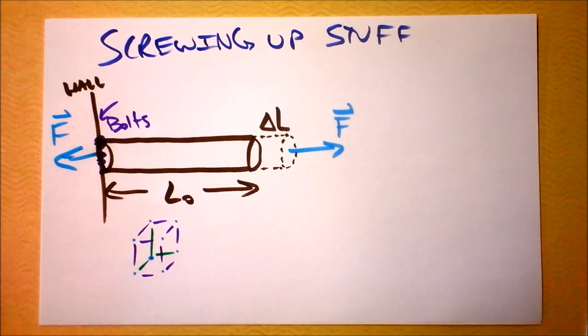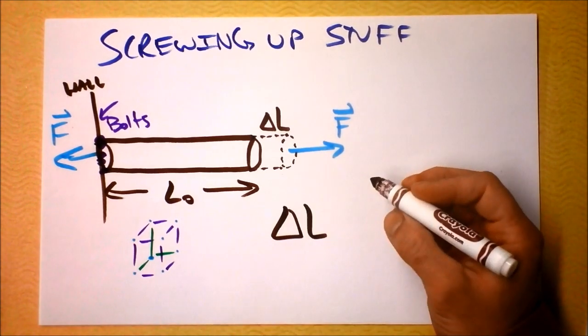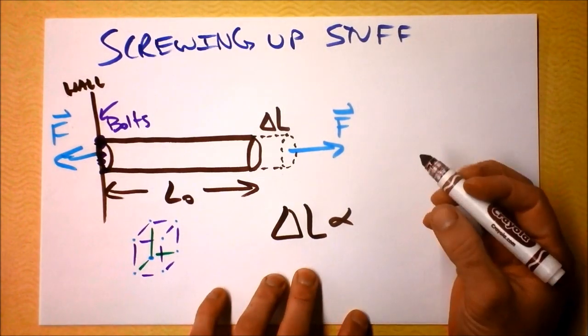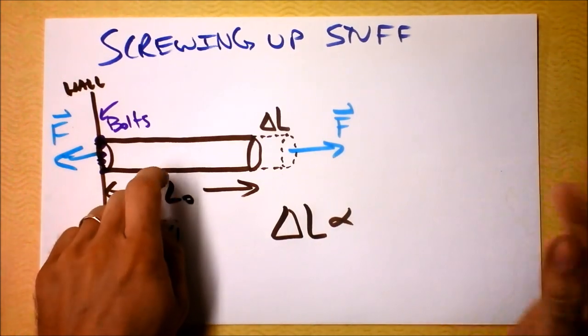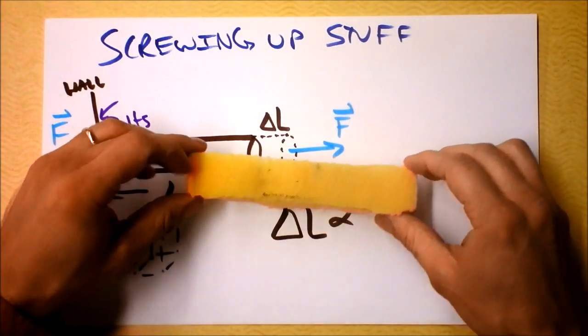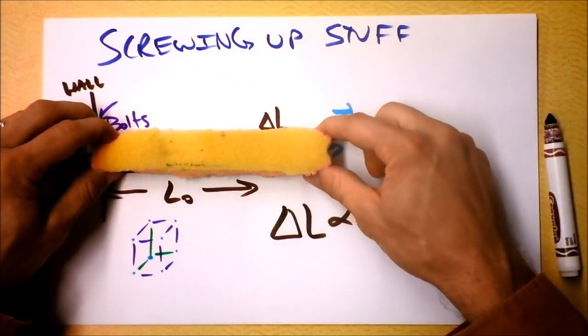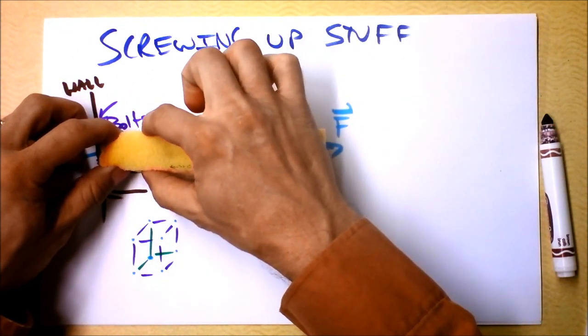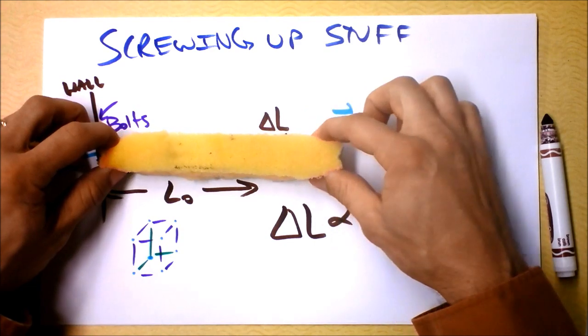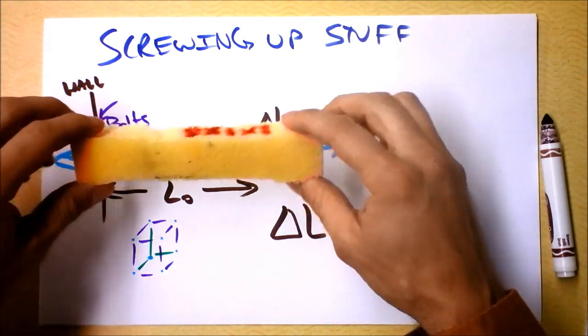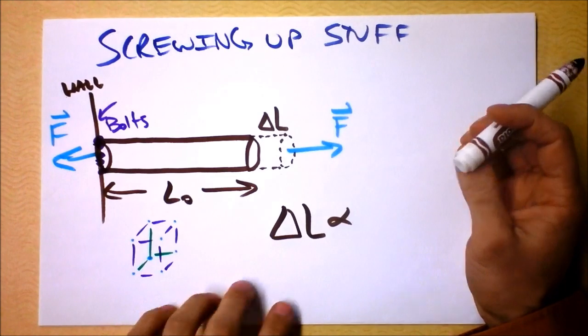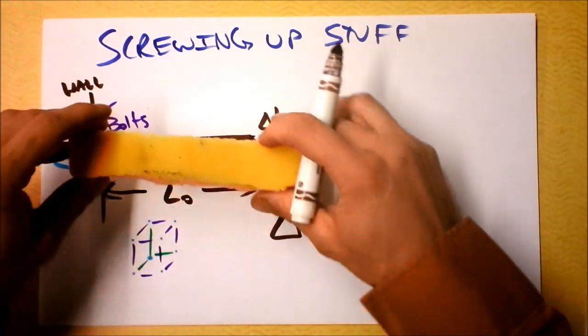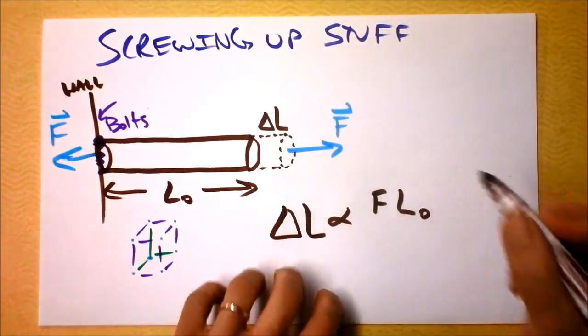We can figure out what delta L might depend on. Delta L is probably going to be proportional to how long it is, L naught. Do you think that if I stretch this, I will get a delta L for some force? What if I try to stretch just a quarter as much? I get a bigger delta L if I stretch it when it is longer. It's probably going to be proportional to L naught. Do you think it will be proportional to how much I'm pulling? Yes, of course it will.